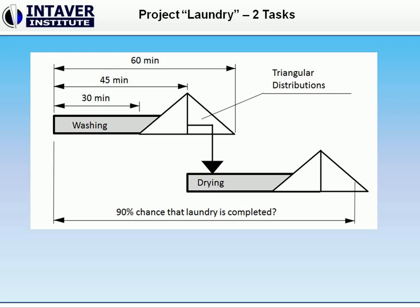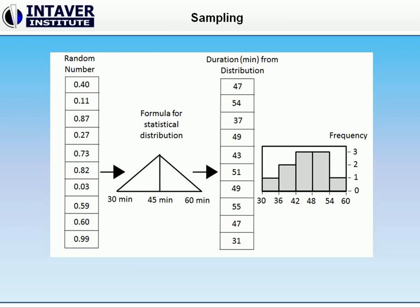Monte Carlo offers a universal way to analyze your schedule. Here's how it works. The first step of the Monte Carlo process is to generate a random number for each task. Then, based on this random number, we get a value from the statistical distribution. In our case, we get the duration of the washing or drying cycle from the triangular statistical distribution. Monte Carlo will take the values associated with the hump of the distribution more often than the numbers associated with the tail of the distribution.